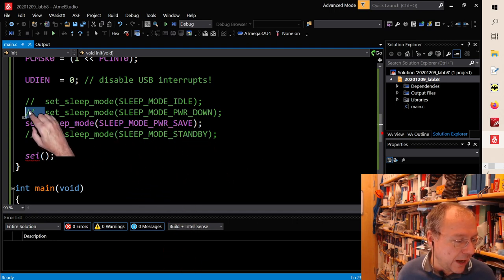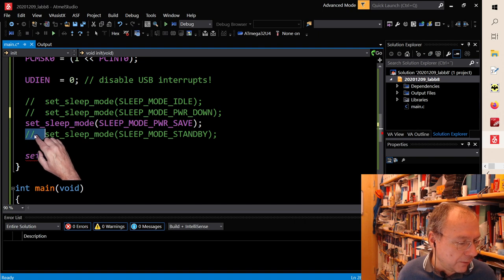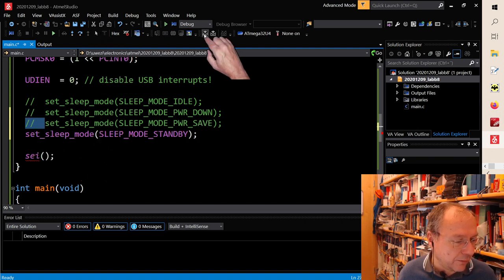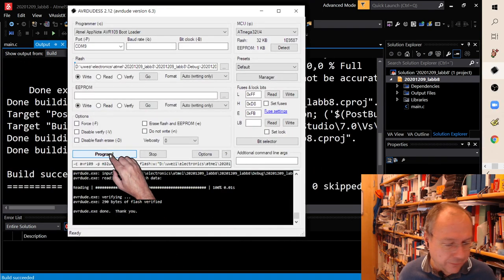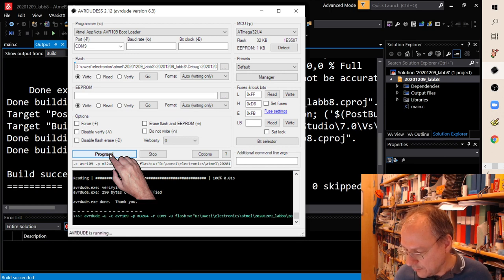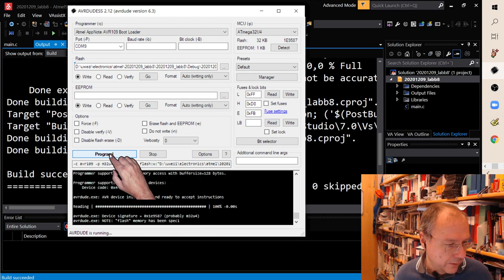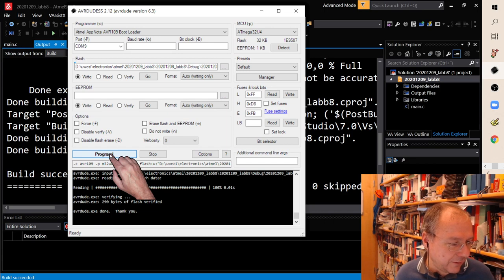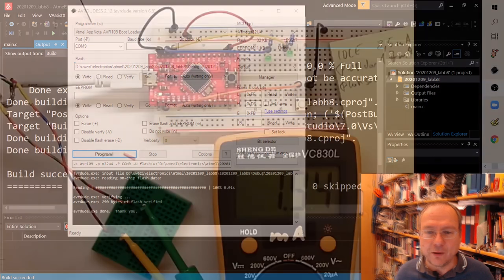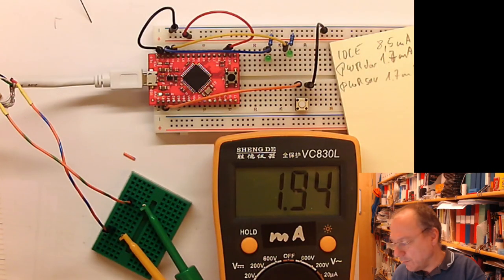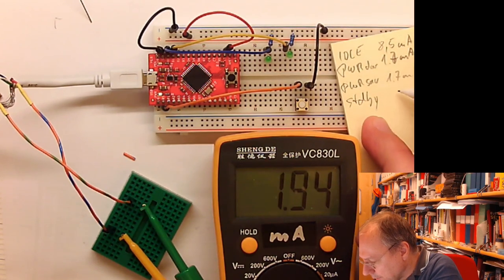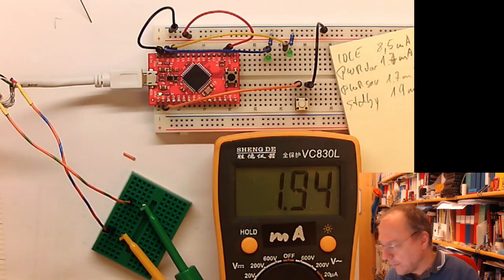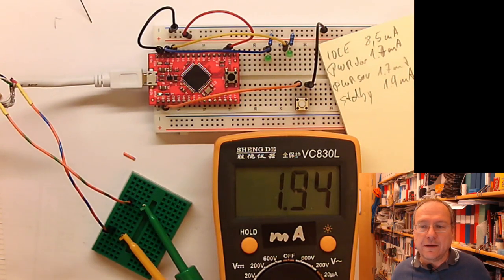And then we still have the last one here, mode standby. I have no idea if there's any difference, I wouldn't expect there to be a difference. So we compile this code, we upload this code. Another interesting thing I will show you in a second. Now that we have - oh, this one is higher in consumption. So in this mode, the standby mode, we have 1.9 milliamps.